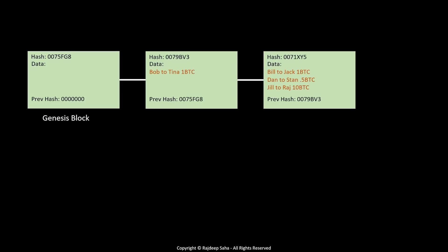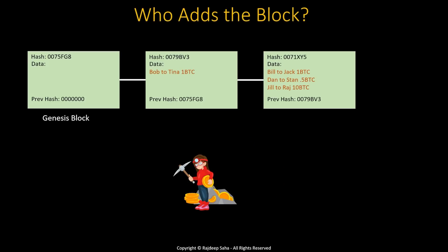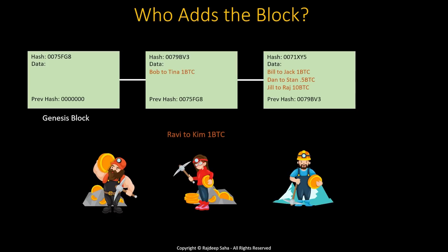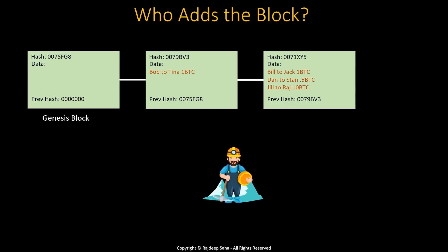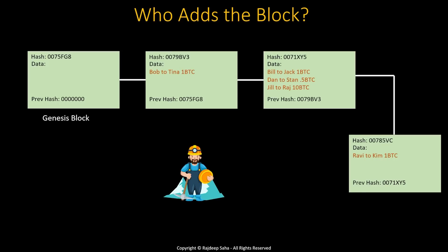Now the question is: who adds this block? The coin miners add this block. Let's say Ravi wants to send Kim one Bitcoin — this transaction will be broadcast to all interested miners, and all these miners will try to add the block first. Adding a block is not just about the transaction; they need to derive the hash based on data and other factors, which requires some retries. Whichever miner derives the next block fastest and correctly gets to add the block to the blockchain. The winning miner gets a reward in cryptocurrency, provided by the person who initiated the transaction — this reward is also called the gas fee.